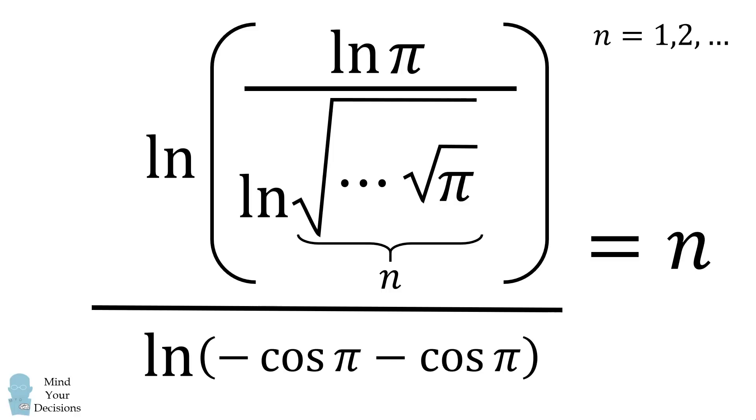We now have a formula for all positive integers n. Then if we wanted to get all negative integers, we simply have a negative sign. You can also see that if n is equal to 0, this entire thing will actually evaluate to be 0 as well. So we have one simple formula and it uses pi exactly 4 times. Incredible!